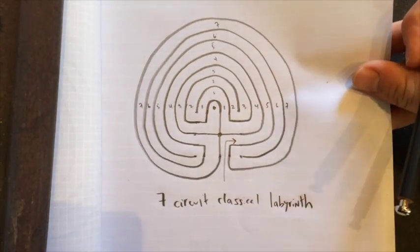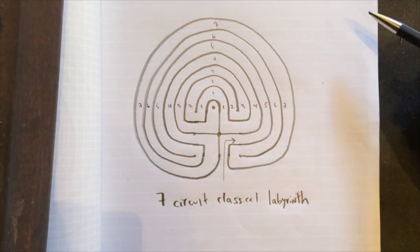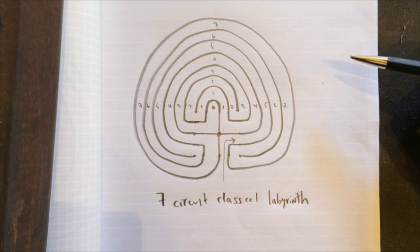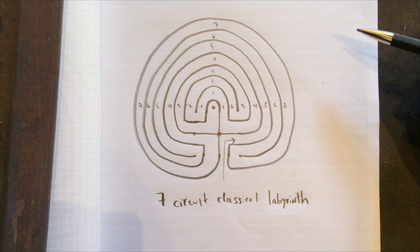And the oldest labyrinth is the Seven Circuit Classical Labyrinth, which may be four to six thousand years old. It's still found on the coasts of Sweden made with stones on the ground.